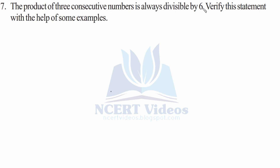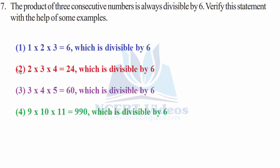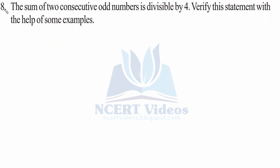Question 7: The product of three consecutive numbers is always divisible by 6 — verify with examples. First: 1 × 2 × 3 = 6, divisible by 6. Second: 2 × 3 × 4 = 24, divisible by 6. Third: 3 × 4 × 5 = 60, divisible by 6. Fourth: 9 × 10 × 11 = 990, also divisible by 6. That was question 7.